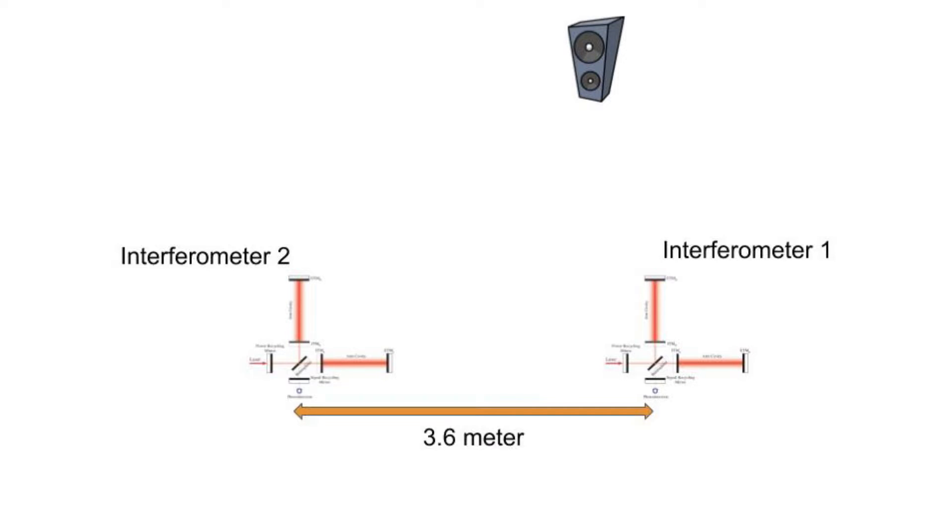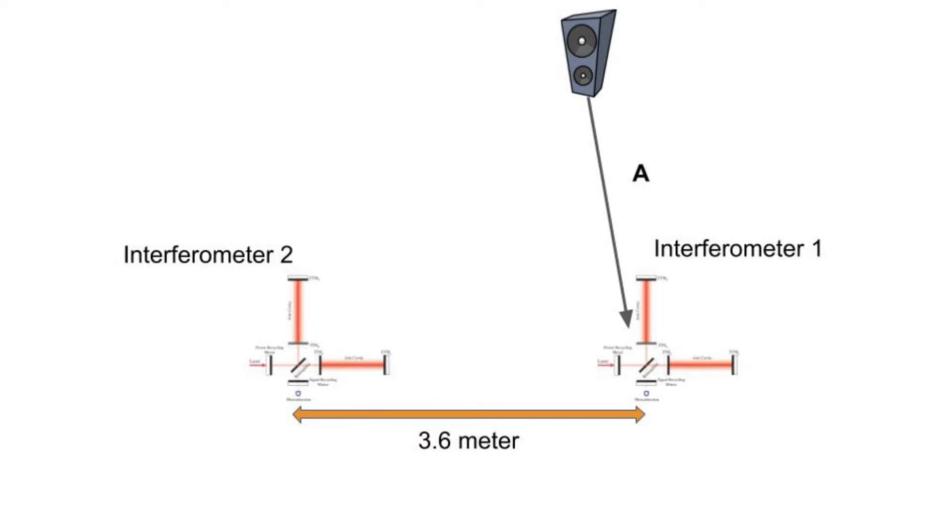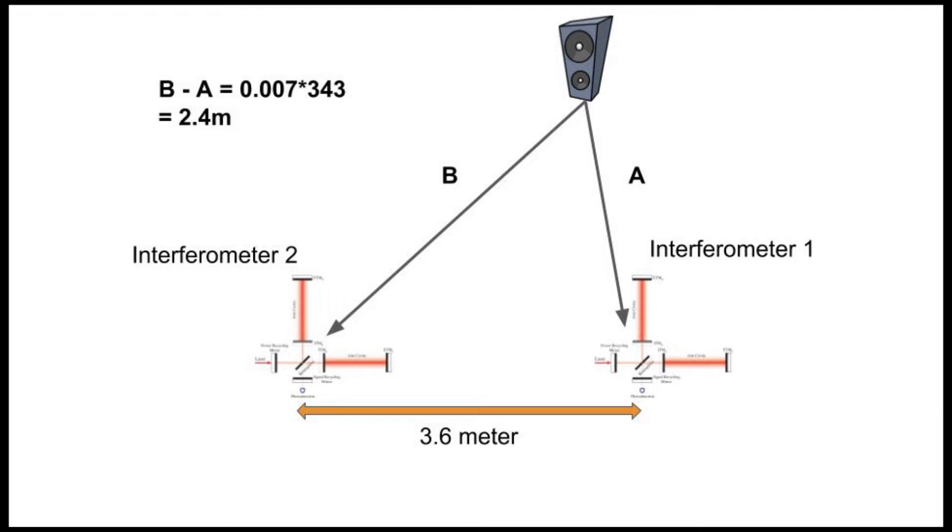Let us review our experiment setup in 2D. We have a speaker at an unknown location. We have two interferometers, which are 3.6 meters away from each other. The speaker is played, and the sound waves travel A meters to the first interferometer, and B meters to the second interferometer. As we analyzed the data from the logger, we knew that the sound waves traveled to the first interferometer 7 milliseconds earlier than the second interferometer. As we have worked out the math, we have the path difference B minus A to be 2.4 meters.